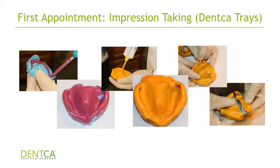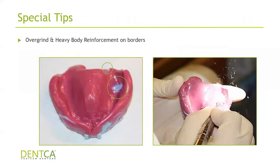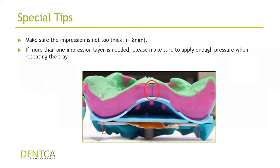Then just wiggle that posterior section free. We remove these posterior sections because we don't want them to get in the way with our tracing. One thing I always try to make very clear is once you separate your tray, make sure the impression is not too thick. When taking your impressions, besides applying equal pressure, you need to apply a lot of pressure — especially when taking the wash — to try to end up with as little material thickness as possible.